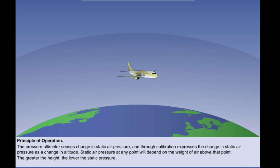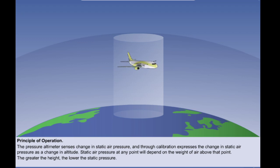In the atmosphere which surrounds the Earth, the static air pressure experienced at any point will depend on the weight of the air above that point. If we imagine a column of air extending vertically upwards from the Earth's surface to the outer limits of the atmosphere, it will be clear that the higher up the column we climb, the shorter the column of air above us becomes and so the weight of air above us reduces. In other words, the greater the height, the lower the pressure.